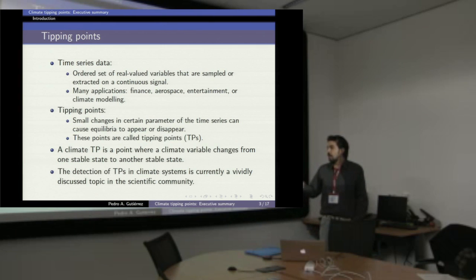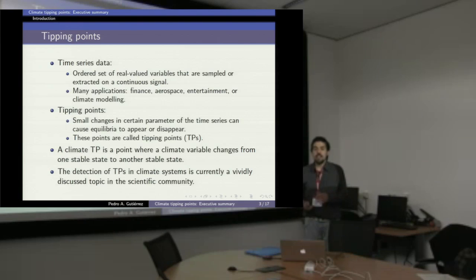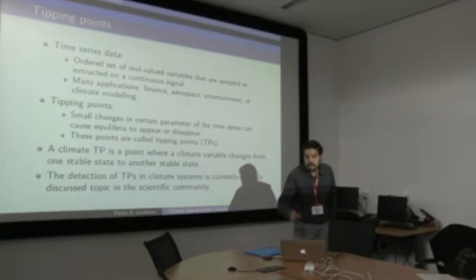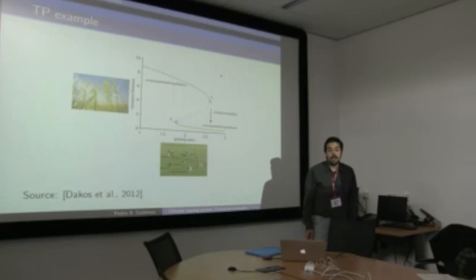The detection of tipping points in climate systems is a very active area. There are many different works trying to characterize tipping points and see what is happening in the time series, especially before the tipping point occurs. Usually one problem is that they use different time windows for different tipping points, which is an inconvenience and you have to study almost every tipping point individually. That's the reason why soft computing techniques are necessary.